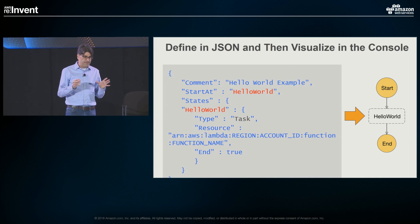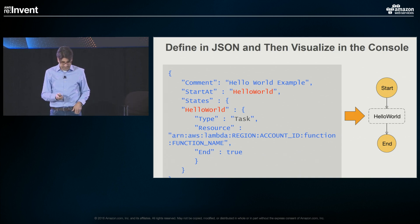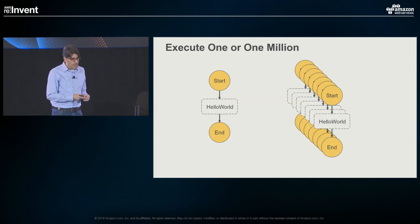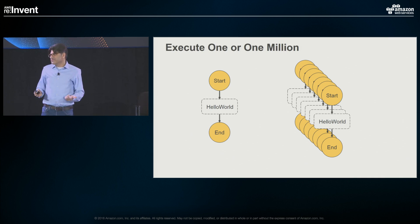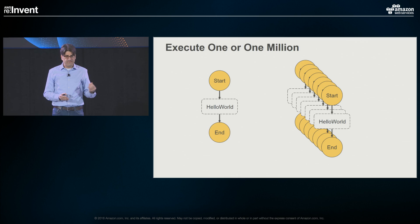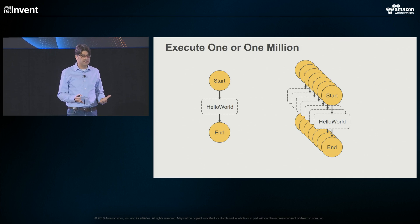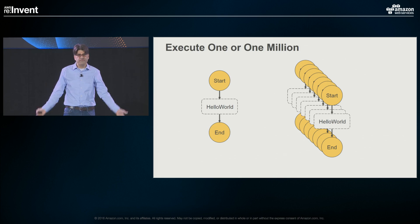We have several types of states to build more complex state machines beyond a hello world. What I want to clarify is that the power of Step Functions is you define a state machine once, declare it as a type, and then you can run thousands and thousands of concurrent executions. This allows you to break big tasks down into a series of smaller tasks and launch a flight of them to break down problems quickly.